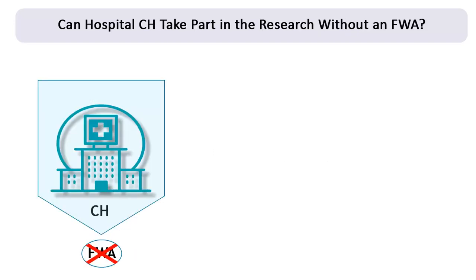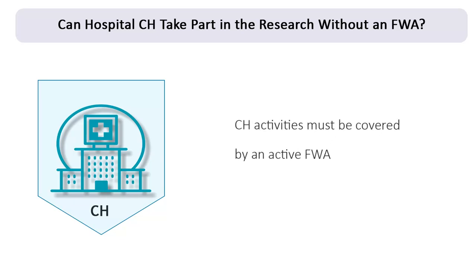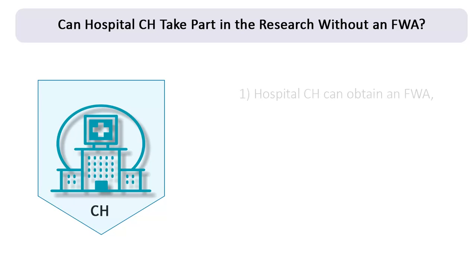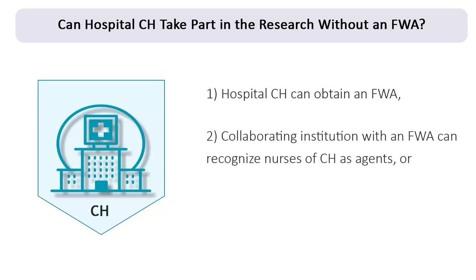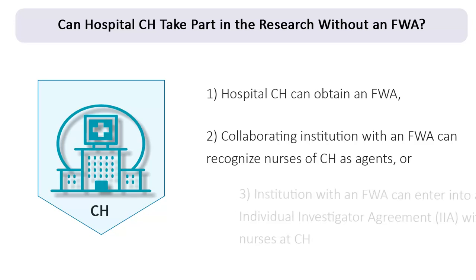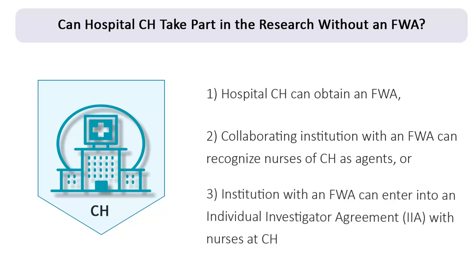Can Hospital CH take part in the research without an FWA? Hospital CH can take part in the research only if it is covered by an active FWA. This can be accomplished in three ways. First, the hospital can file and obtain an FWA from OHRP. Second, University A or another collaborating institution with an FWA could recognize that the employees of Hospital CH are acting as its agents for the purposes of the research study. Third, University A or another participating hospital may be able to extend its FWA to cover the research activities of Hospital CH's nurses by entering into an Individual Investigator Agreement, or IIA, with the nurses. You can refer to the 2005 OHRP Guidance on Extending an FWA to Cover Collaborating Investigators found on OHRP's website for more information.